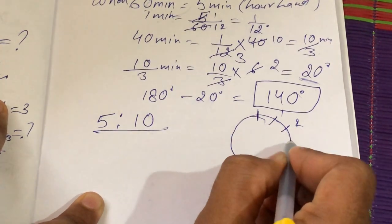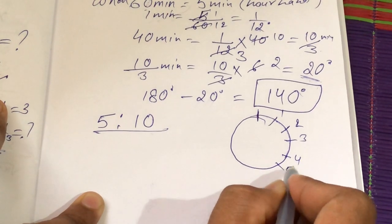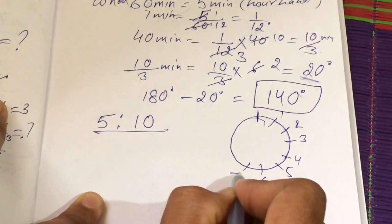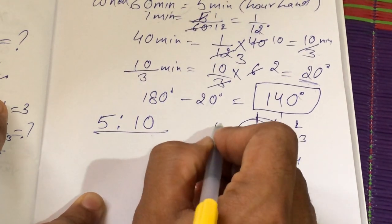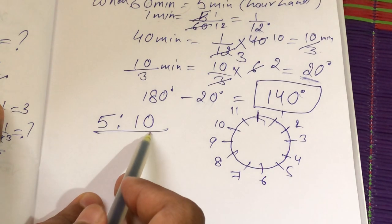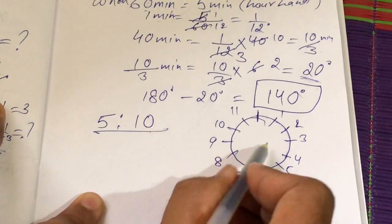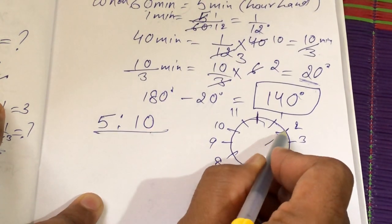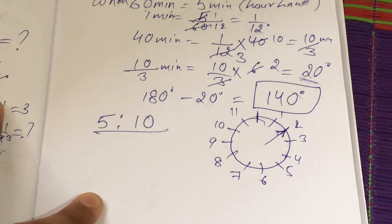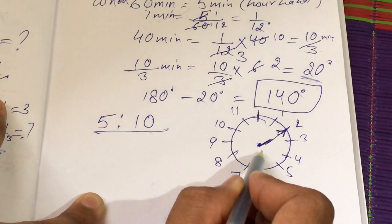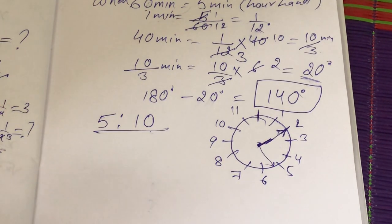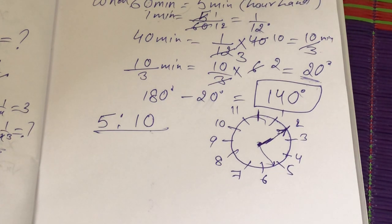Drawing the clock: 1, 2, 3, 4, 5, 6, 7, 8, 9, 10, 11, 12. At 5:10, it means 10 minutes have passed after 5 o'clock. So the minute hand is on 2, because 10 minutes brings it to 2. The hour hand has moved a little past 5 — it's slightly ahead of 5 because 10 minutes have passed, so the hour hand moves a little beyond 5.